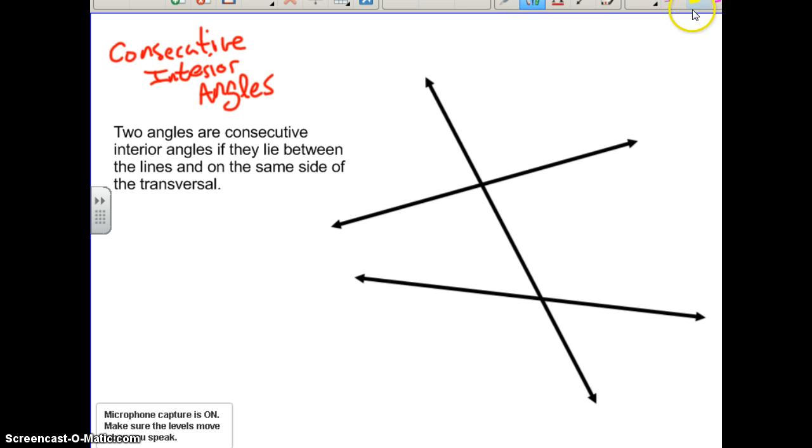Just like alternate interior angles, we're talking about the space between the two lines, but this time they're on the same side of the transversal. So consecutive interior - consecutive here meaning one after the other - consecutive interior is on the same side of the transversal and in the interior space.